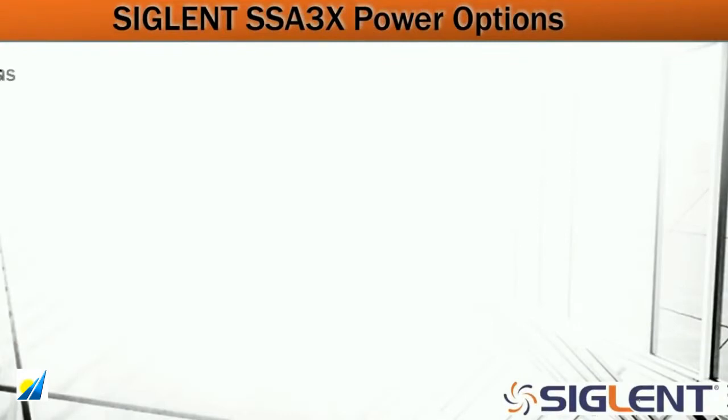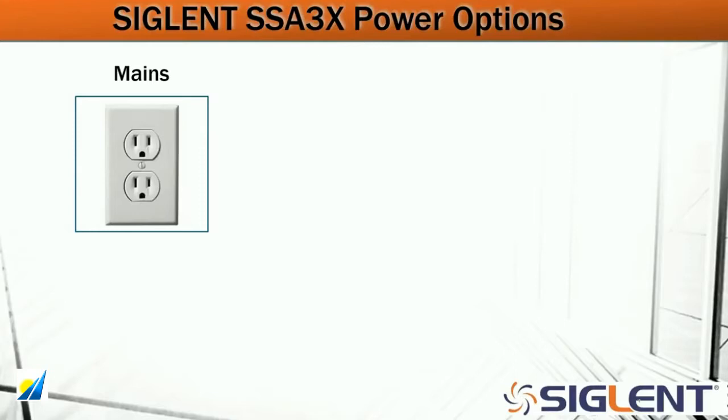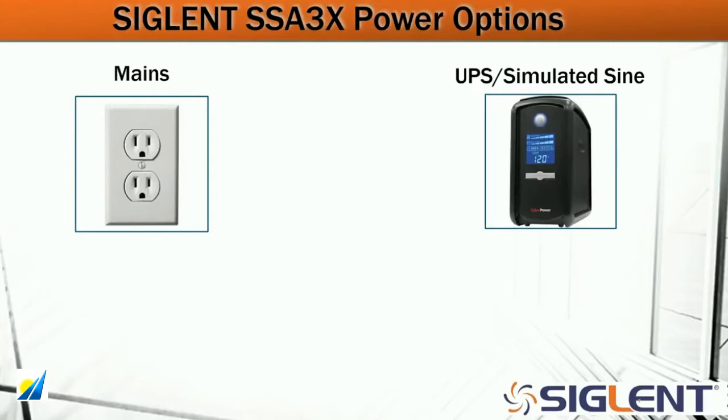So what kind of power options do we have? Mains, which is 60Hz, 120V peak-to-peak sine wave here in North America. We've got uninterruptible power supplies or UPSs with simulated sine wave outputs. And we also have, for more rugged applications, inverters, which are generally attached to vehicles or other batteries for remote applications.